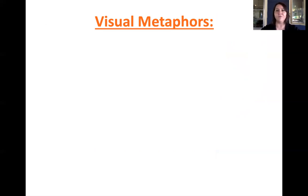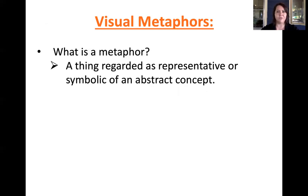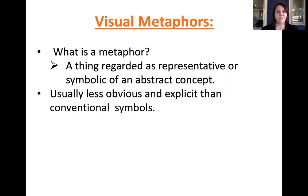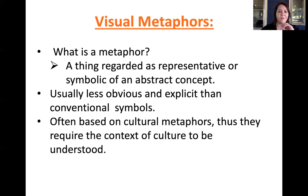The next thing I want to talk about is visual metaphors, which often comes up when we're talking about symbolism and cultural context. A metaphor is something regarded as representative or symbolic of an abstract concept — a comparison, similar to a simile. Visual metaphors are often less obvious and explicit than conventional symbols like the swastika and caduceus. Visual metaphor is open to more interpretation, and they're often based on cultural metaphors, so they require the context of culture to be understood.